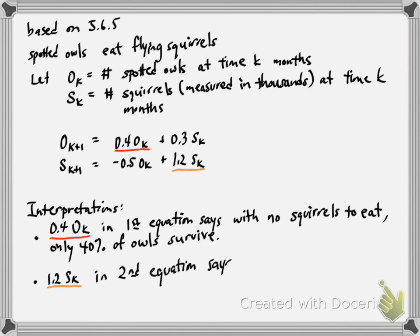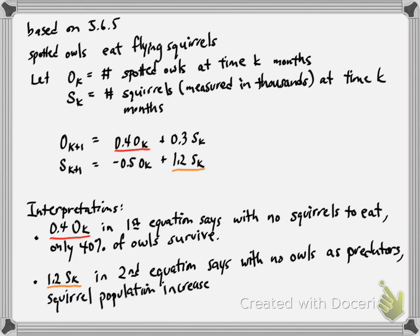The 1.2 times S K in the second equation says that if there were no owls, so if OK was 0, if there were no owls as predators, then the squirrel population would just increase by a factor of 1.2, so that's a 20% increase every month.